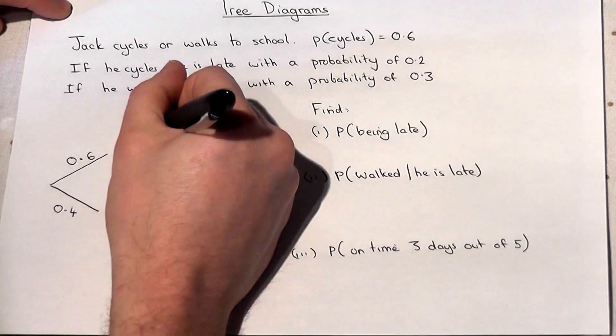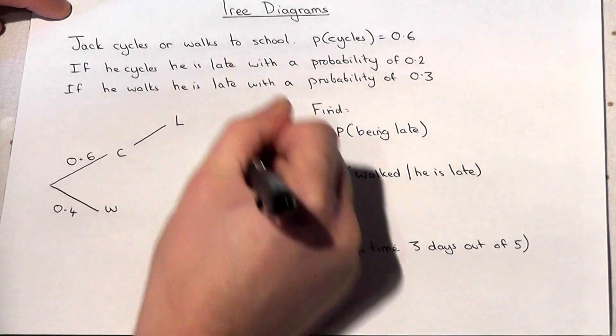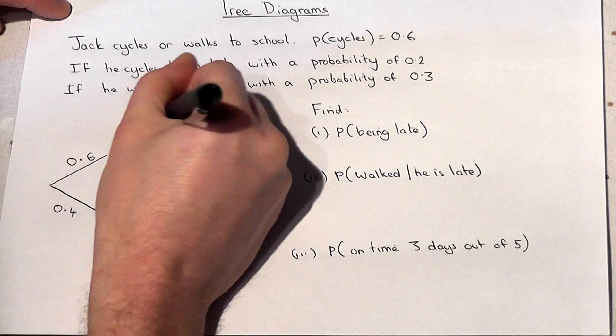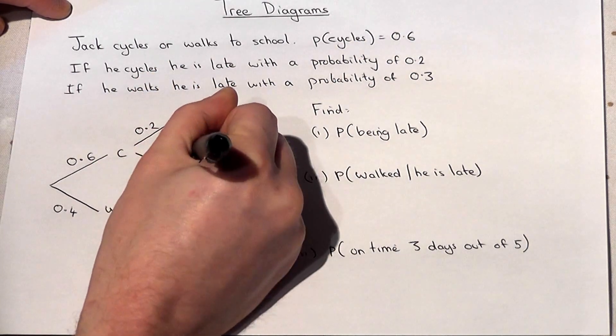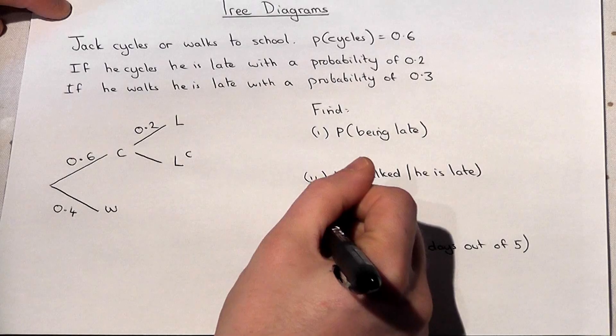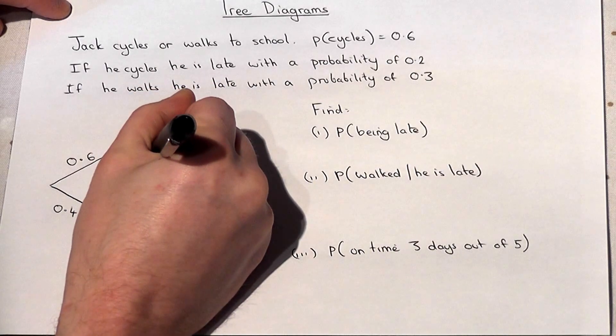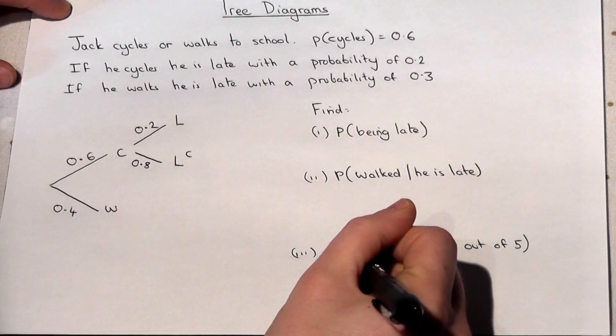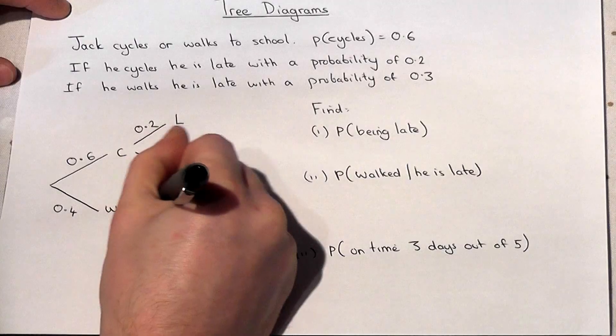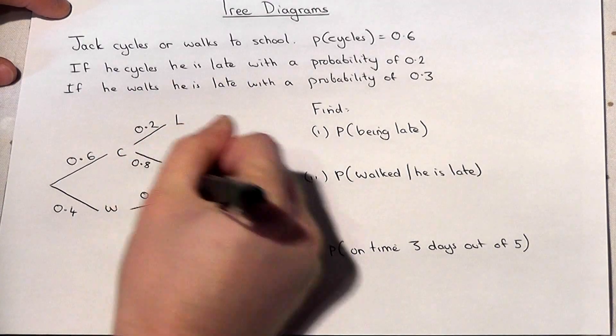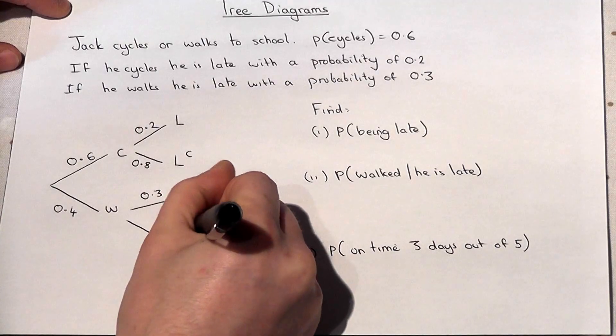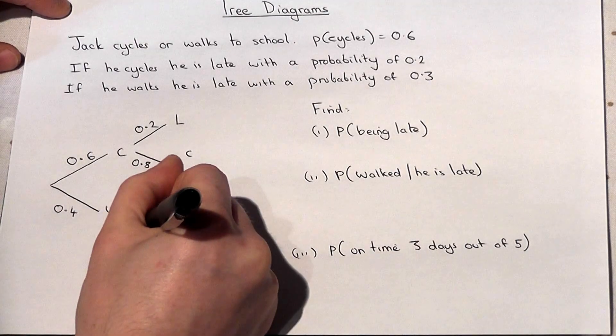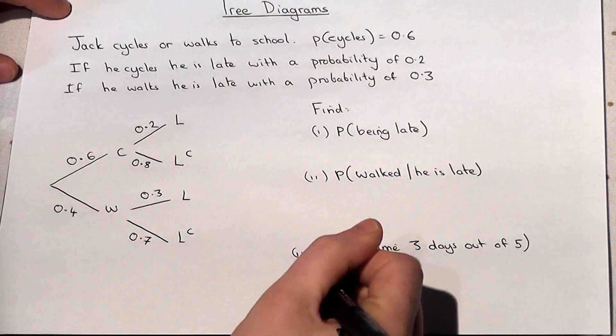Now then, if he cycles, the chance he is late is 0.2, so the chance he is not late or late complement must be 0.8. Then if he walks, he's late with a chance of 0.3, but if he walks then he is therefore not late with a chance of 0.7.